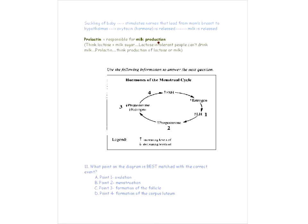This question says: which point on the diagram is best matched with the correct event? LH levels being high corresponds with step number one — ovulation. At the point of ovulation, LH was high and progesterone was low.